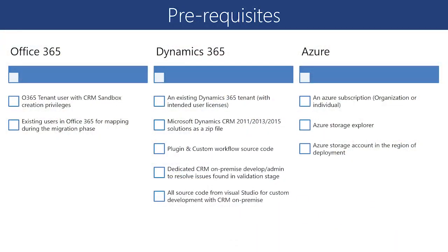Let's quickly look at prerequisites. As described earlier, we have three major components. For Office 365, we want proper licenses and environments in place. For Dynamics 365, we need all the right environments including the one you want to migrate, and we want your plugin and custom code evaluated to identify potential issues when moving to online. On the Azure side, we need all subscriptions in place so we can leverage your Azure subscription to create an environment in LCS.